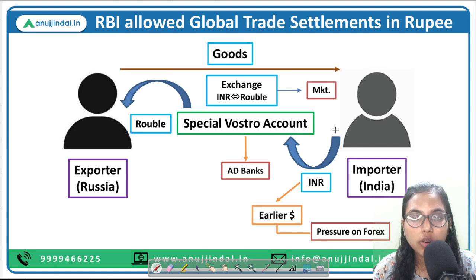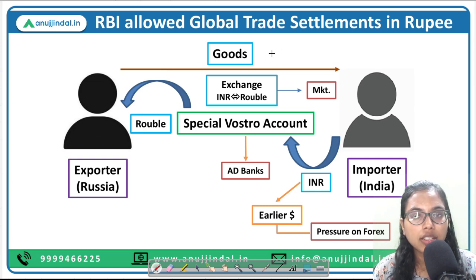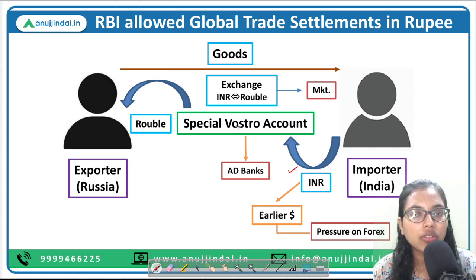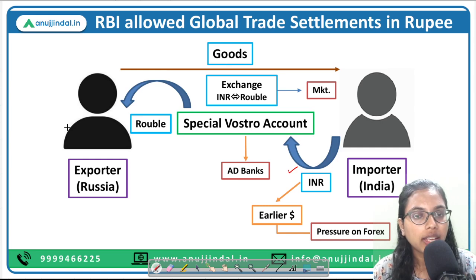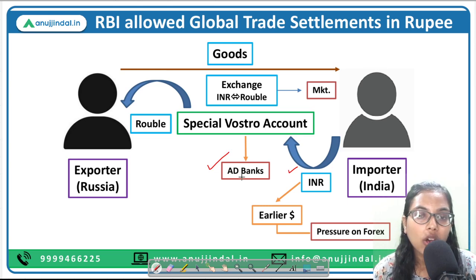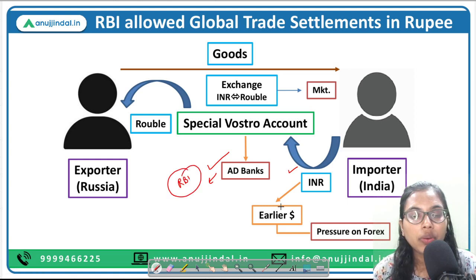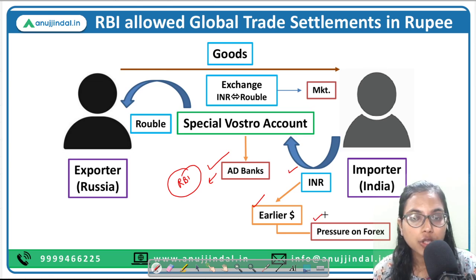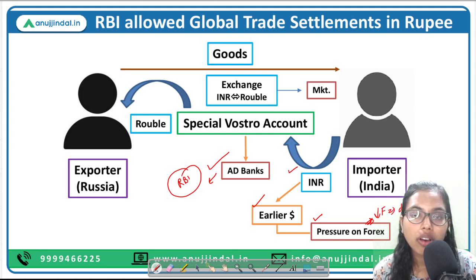From the importer's point of view: an importer imports goods from a Russian exporter and can pay directly in INR or deposit INR in the Vostro account. This INR is then exchanged at market rates into ruble and paid to the Russian exporter. These Vostro accounts are managed by authorized dealer banks, with prior approval from RBI. Earlier, the importer had to convert INR into dollars, which put pressure on forex reserves, contributing to currency depreciation.